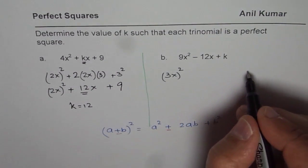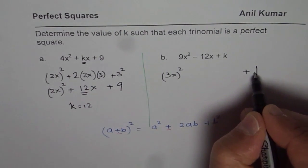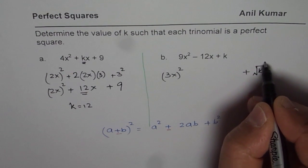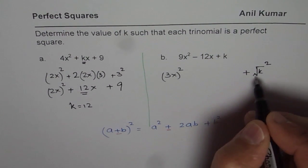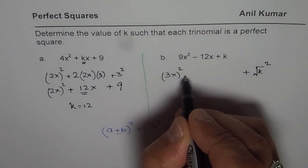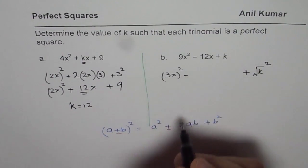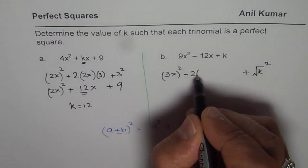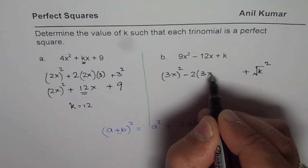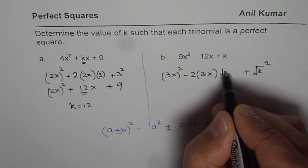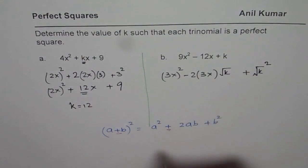Now k, so this could be written as, well, in this case we can write this as √k squared. That is kind of critical. The center term here will be minus, minus is fine. 2 times, we know this is 3x, and this is √k. So that is what it is.